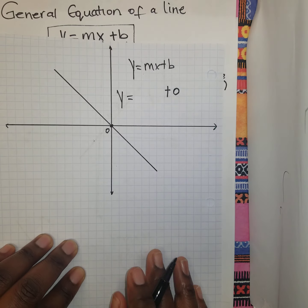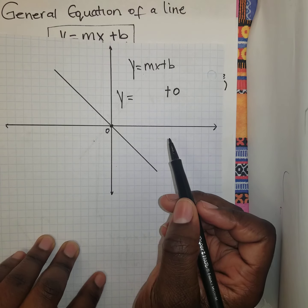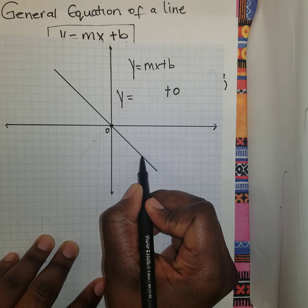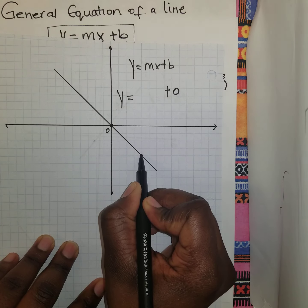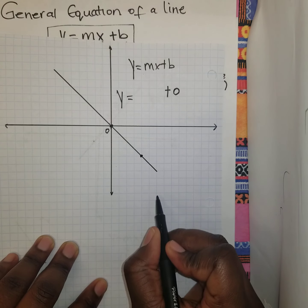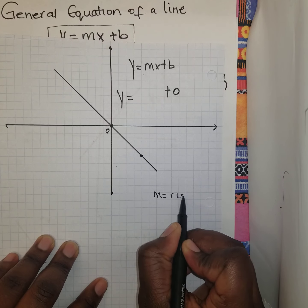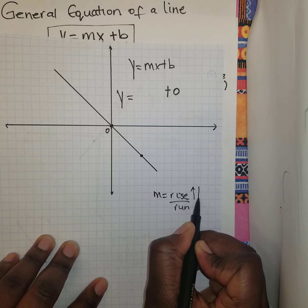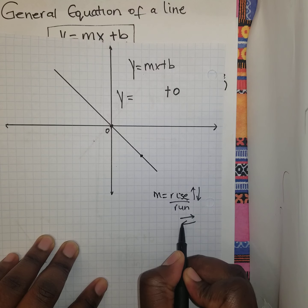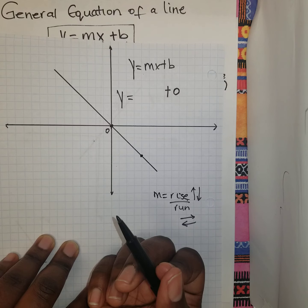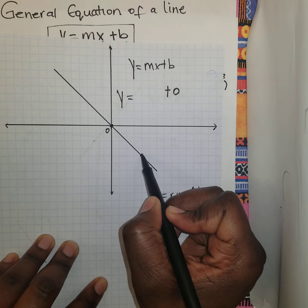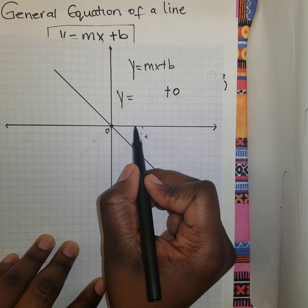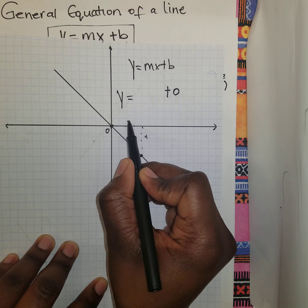It's time to find the gradient. You can choose any two points on this line. So I'm going to choose this point and another point. Remember, m is represented by rise over run — the rise could be going up or going down, and the run could be going to the right or to the left. I go rise first: 1, 2, 3, 4 — so my rise is 4. My run is also 1, 2, 3, 4 — so it's also 4.